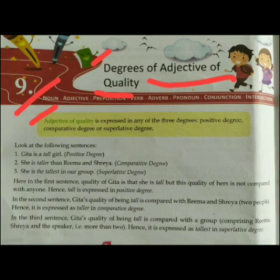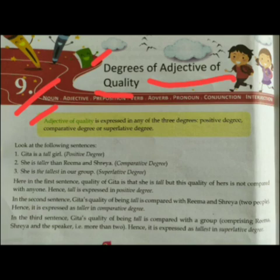Adjective of quality means quality का adjective जो होता है उसकी तीन degrees में से किसी एक में express किया जाता है — means व्यक्त किया जाता है। Positive degree में, comparative degree में, या फिर superlative degree में। इन तीनों में से किसी एक में express किया जाता है।